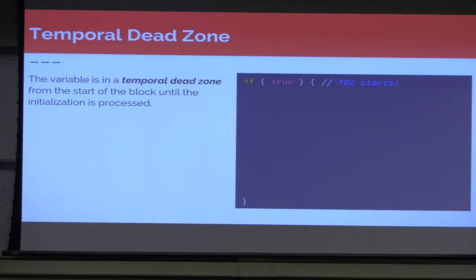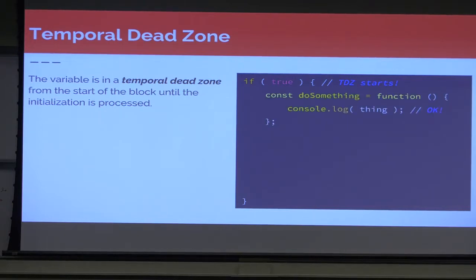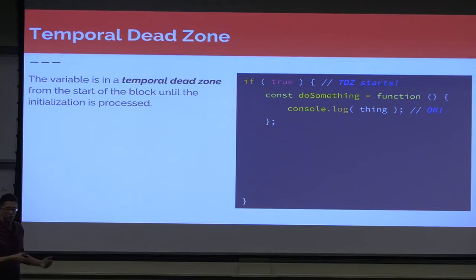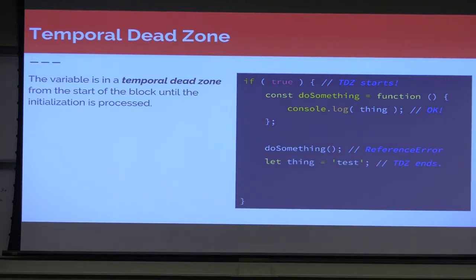Another thing in ES6 is the temporal dead zone in blocks. This is our block — just an if statement — and this is where the temporal dead zone starts. If we create a const variable equal to a function and we're console logging 'thing', but we don't have 'thing' yet — that isn't a problem until you try to run it. But if I actually set 'thing', then our TDZ ends. We're no longer in the temporal dead zone, and now if we call it, we're not going to get a reference error.